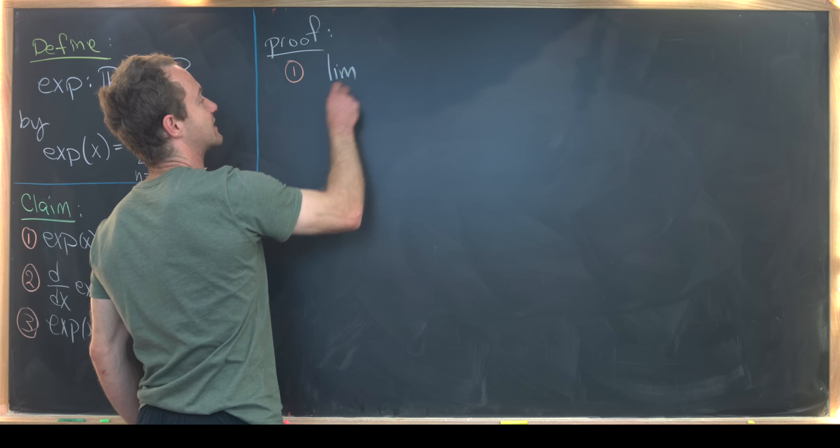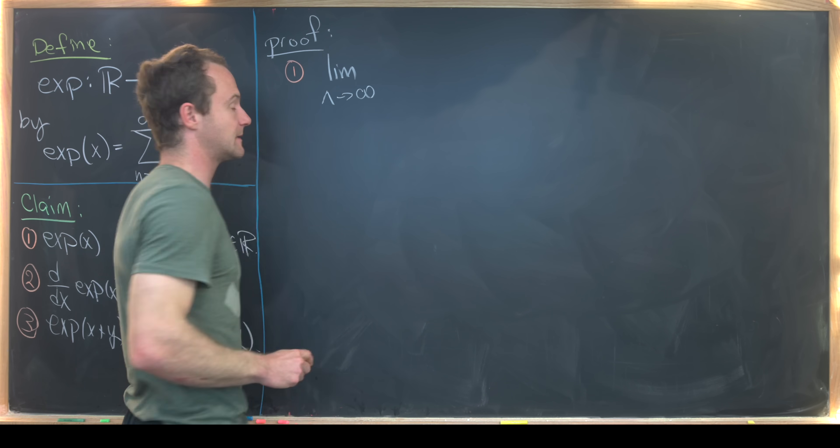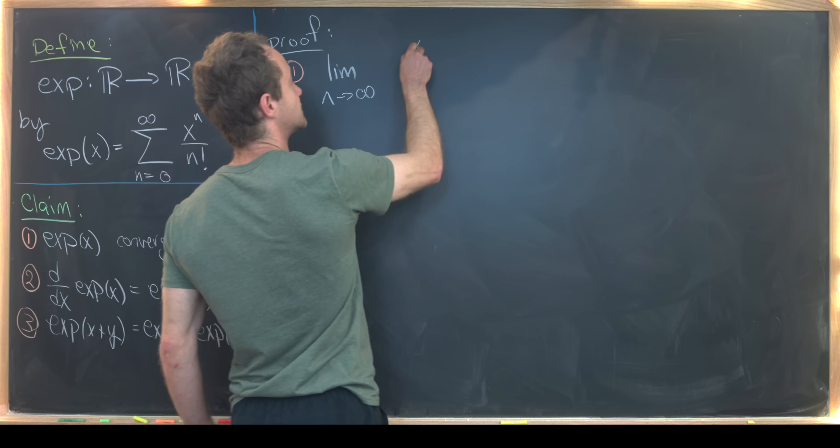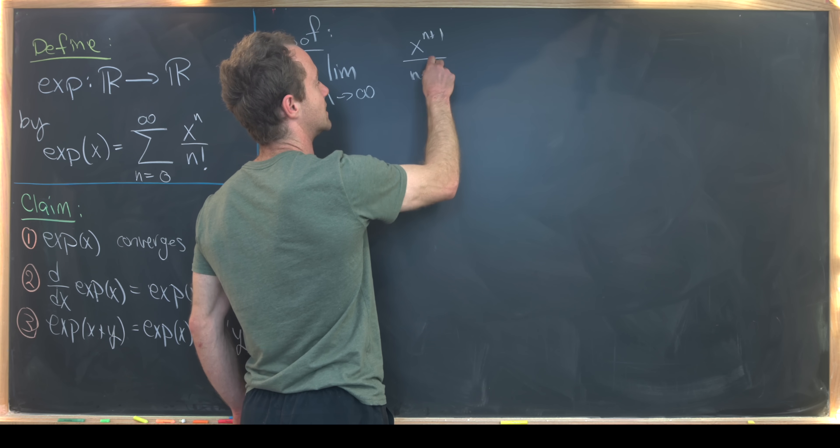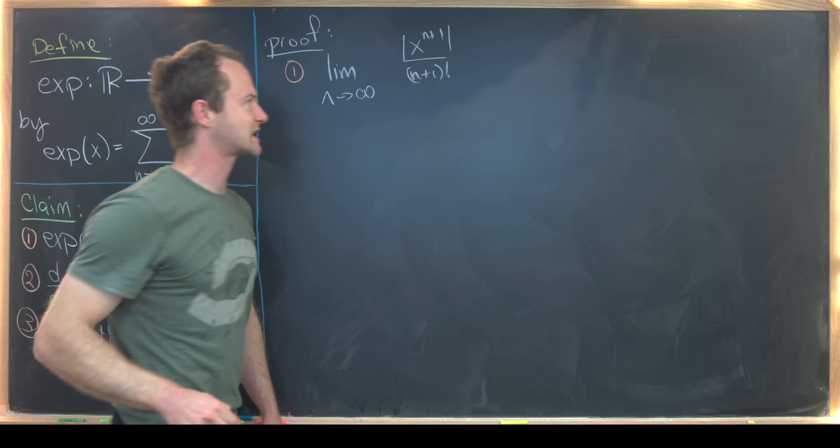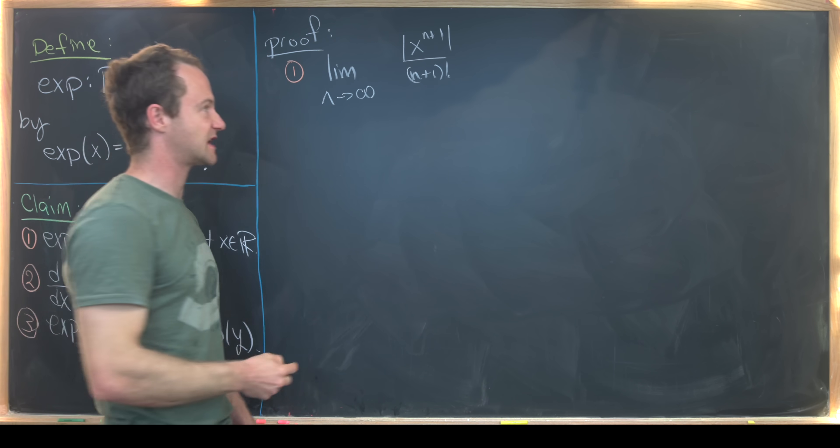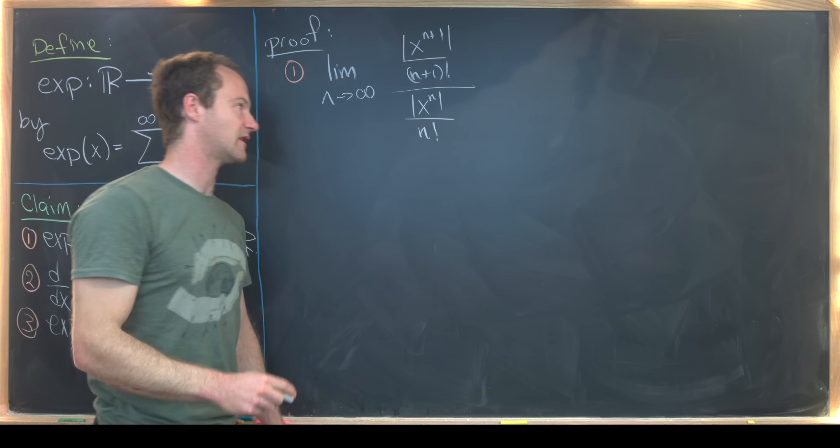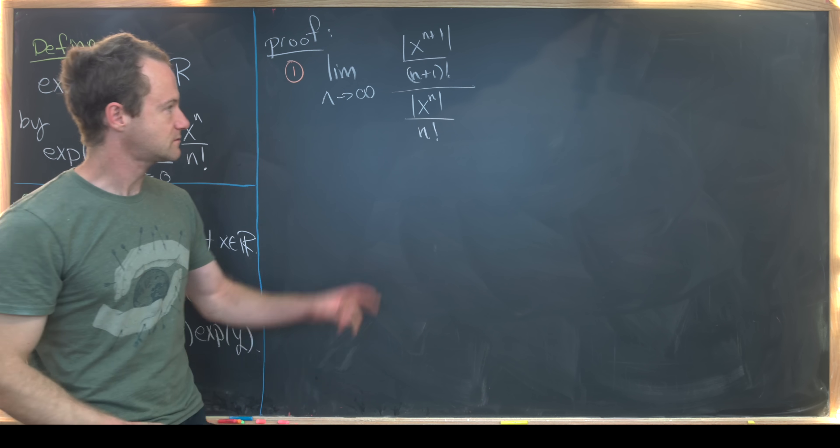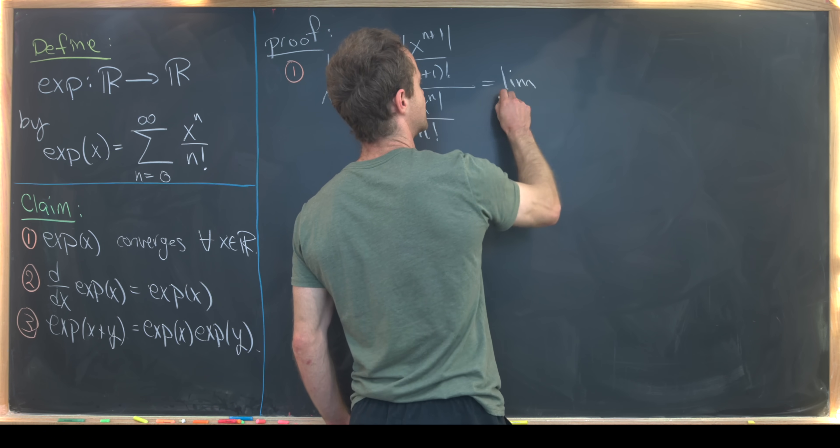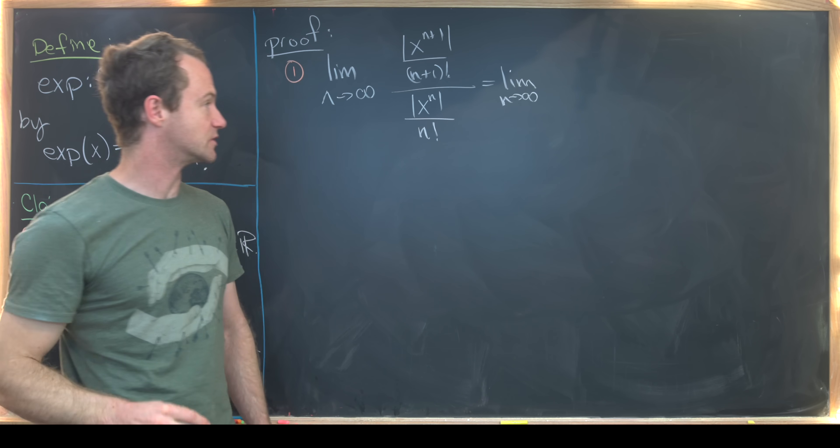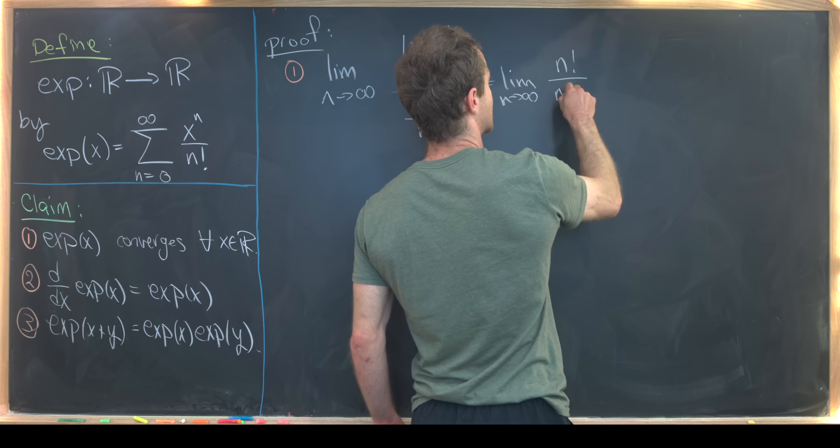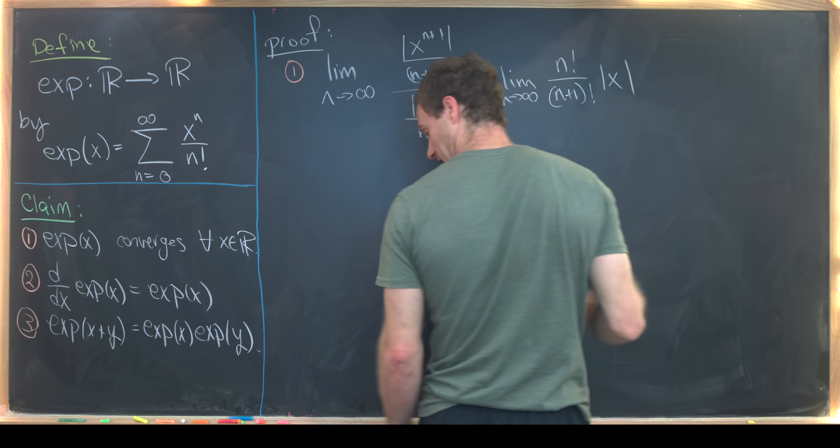So that means we need to take the limit as n goes to infinity of the n plus first term of this series over the nth term. So that's going to give us x to the n+1 over (n+1) factorial. I need to put my x part in absolute values because it's possible that could be negative, then divided by x to the n over n factorial, where again, that x part is in absolute values.